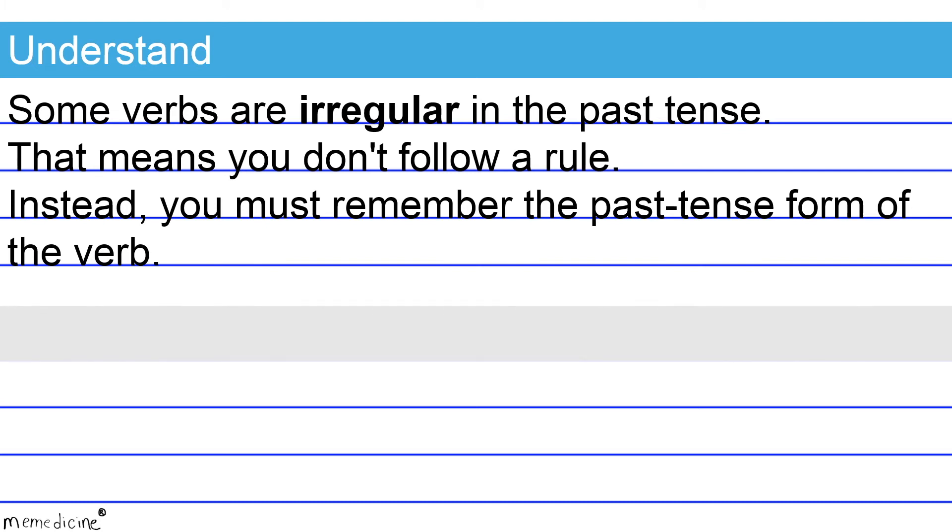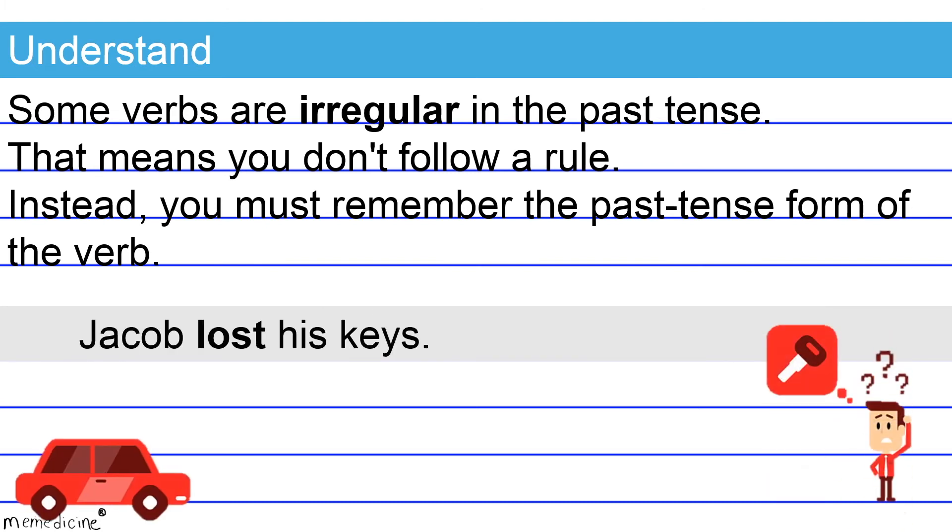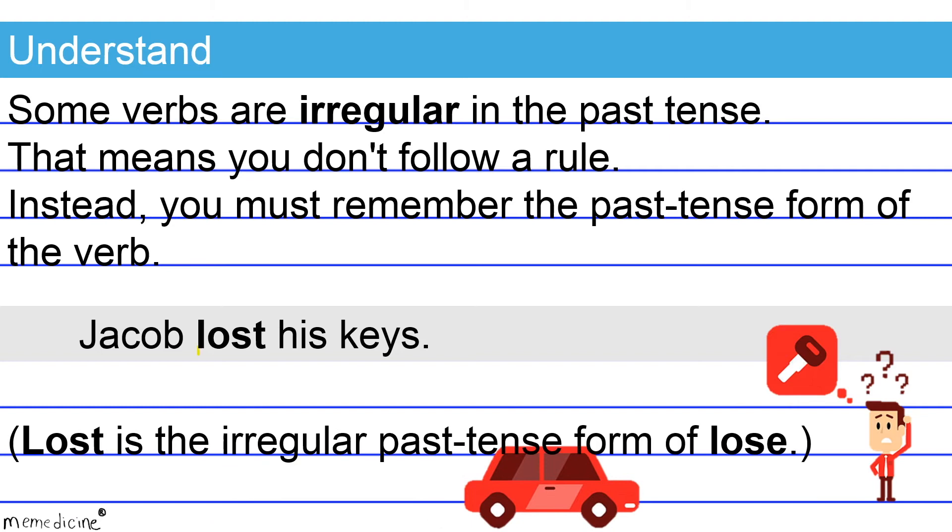Check out this example. Jacob lost his keys. Lost is the irregular past tense form of the verb lose. This is a correct shift and the overall sentence is formatted correctly.